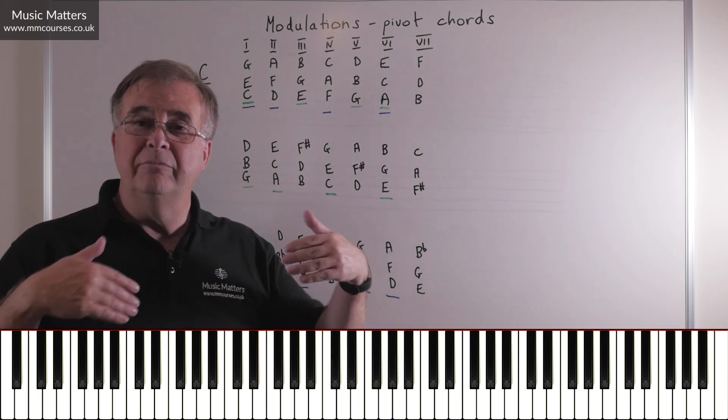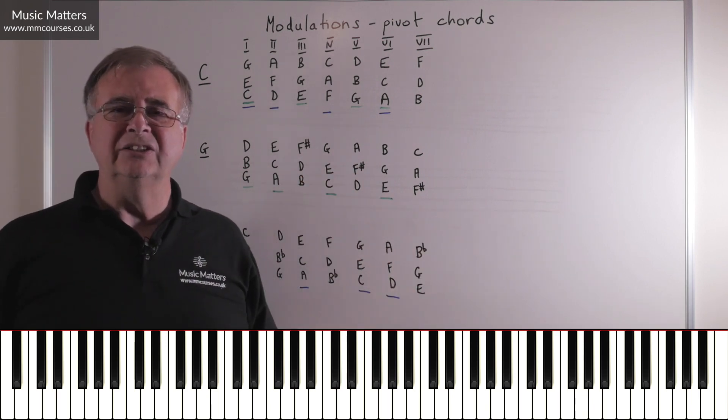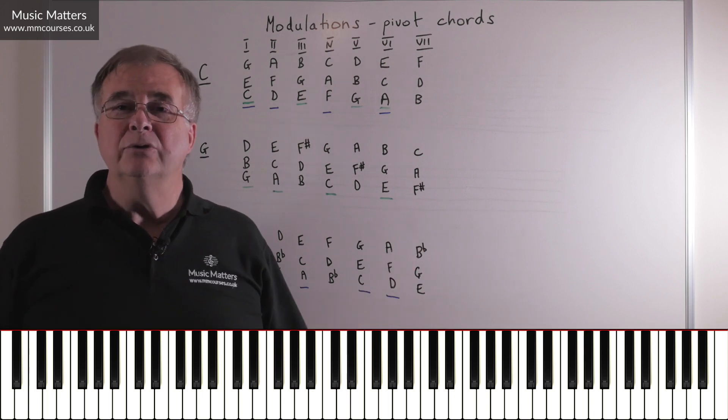And you see, once I've been through the pivot chord, then I just introduced the accidental for the new key or the accidentals, and then I'm in the new key. So that's how to modulate using pivot chords.